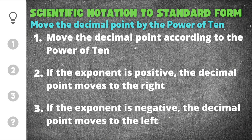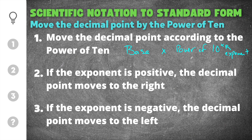A number written in scientific notation has two parts. It has the base that is being multiplied times a power of 10. There's always an exponent on the power of 10, and this exponent tells you how many times you move the decimal point.